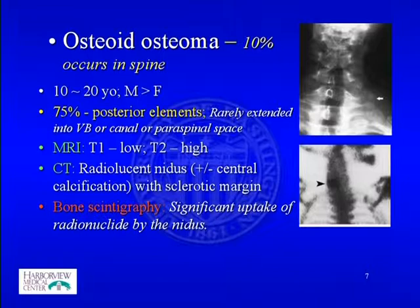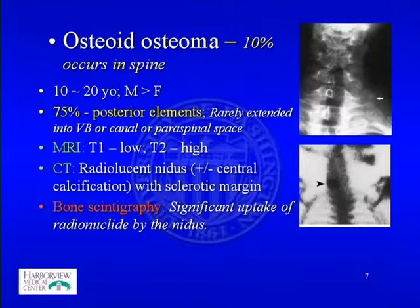Osteoid osteoma has about a 10% chance of occurring in the spine, normally between ages 10 to 20 with male predominance. There's a 75% chance it occurs at the posterior elements and rarely extends to the vertebral body or canal. MRI is not very specific, but CT scan can show a radiolucent nidus without calcification, and bone scan shows increased radionuclide uptake at the nidus.